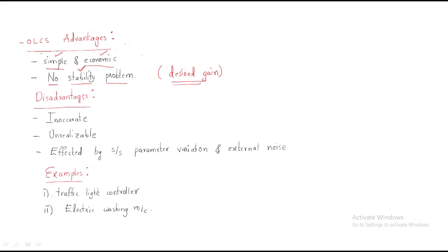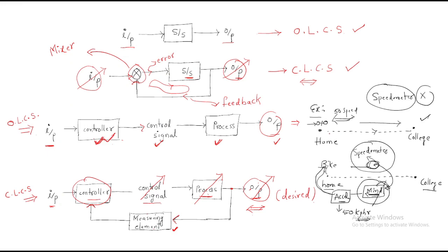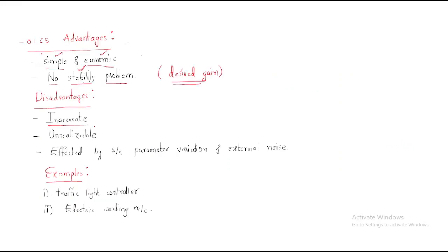The open-loop control system has some disadvantages. The first is that it is inaccurate — the required output is generally inaccurate. For example, if we take a bike from home to college, we don't know how much time it will take to reach — that is the meaning of inaccurate.